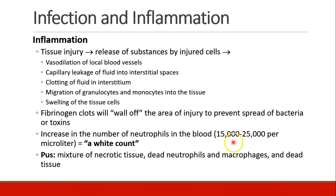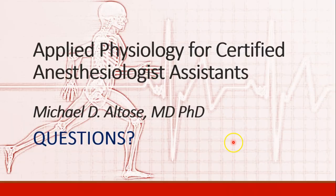Pus, which we see at sites of infection, is usually caused by a mixture of necrotic dead tissue, dead neutrophils and macrophages, and other dead pieces of tissue. That's it for this recording. Please let me know if you have any questions.